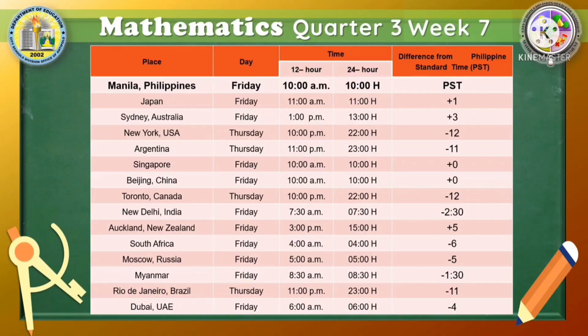I'll give you a few seconds to familiarize the information given on the table. Based on the time in Manila, Philippines, what do you think is the time in South Africa? Did you say 4 AM? You're right! Just subtract 6 hours from the reference time because South Africa is 6 hours behind.